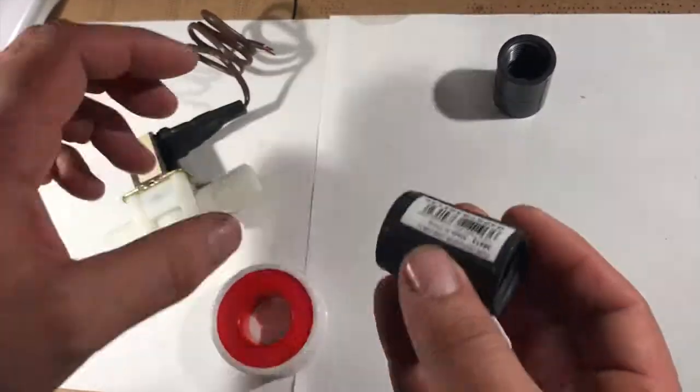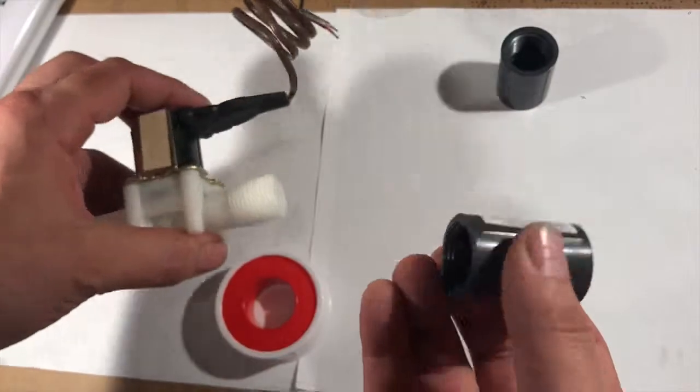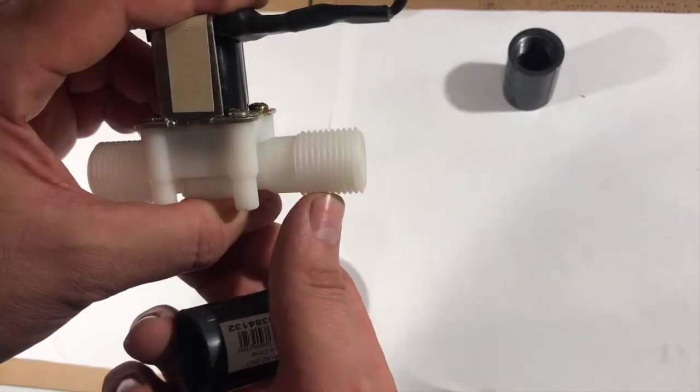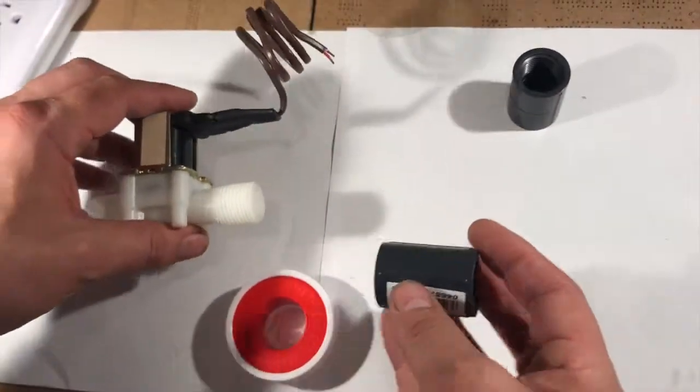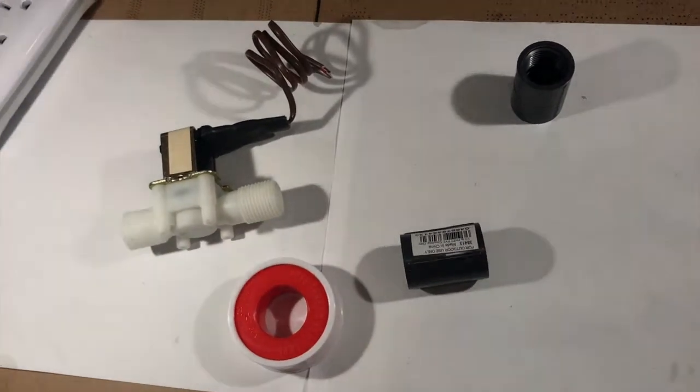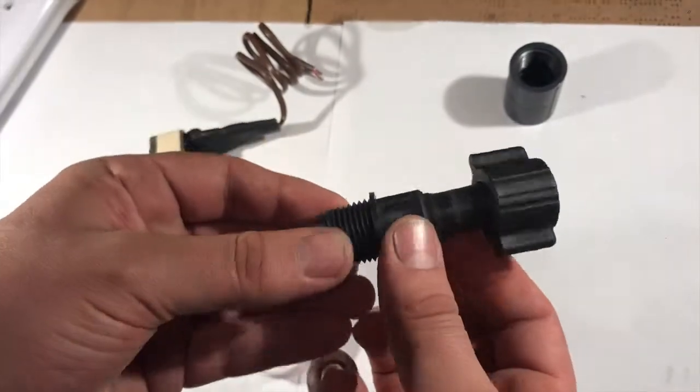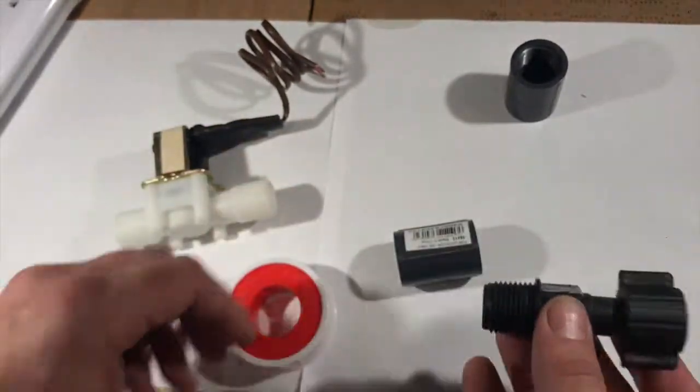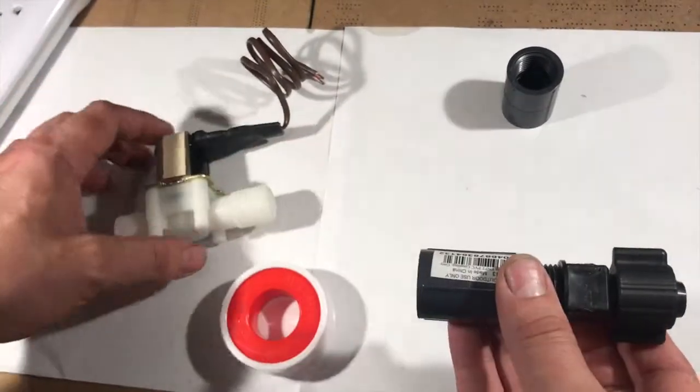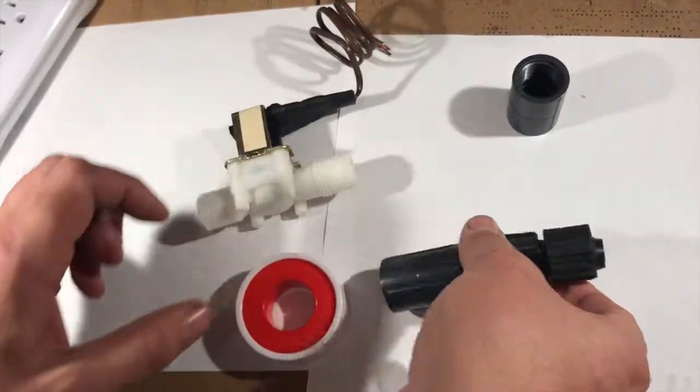You could probably get a component that goes straight from poly to half inch but what we're going to do is show you how to add on. We've got here just some old PVC to poly, threaded PVC to poly tubing so we're going to use the couplers, join them to the threads like this and we're going to show you how to do that.